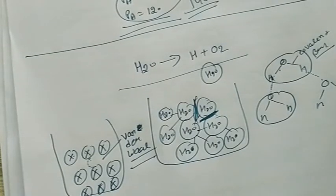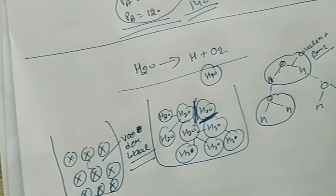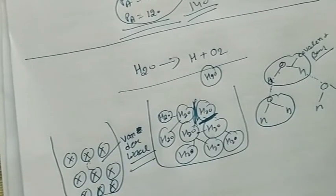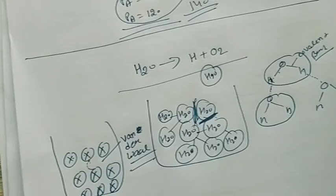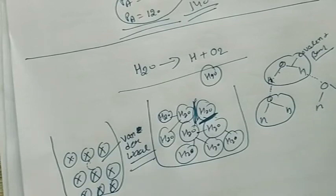Positive deviation means pressure is higher than ideal — that means the force between A and B is weak. You can write: 'Due to the weak force of interaction between solute and solvent, the solution shows positive deviation.' If you are not certain whether H-bond is involved or not, just write 'weak force of interaction.'